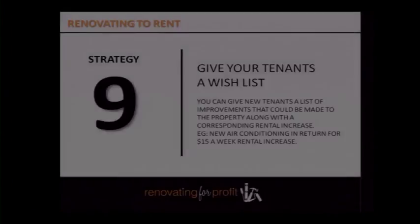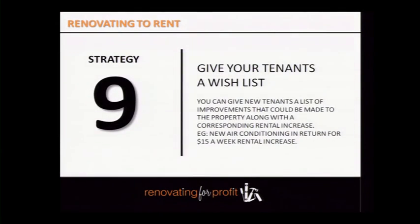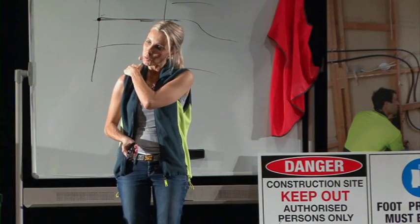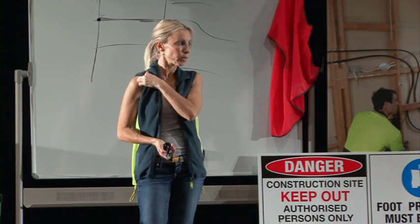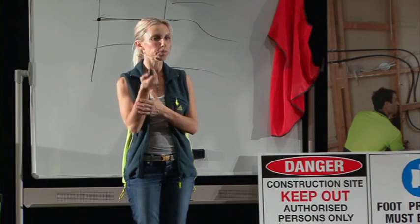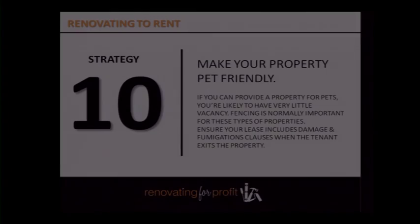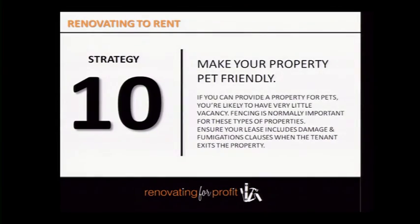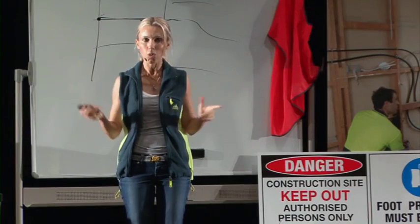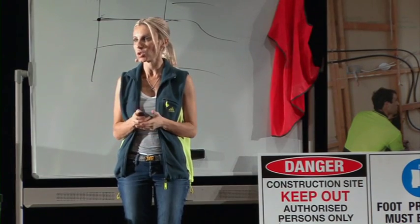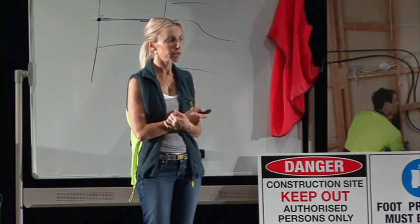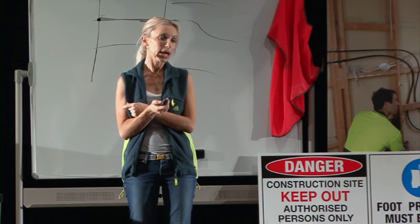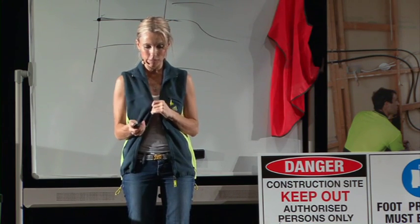Give tenants a wish list. If there are items you couldn't install during the renovation, offer them as optional upgrades for a small weekly increase — for example, 'I'll install split-system air conditioning if you pay an extra $20 a week' or 'ceiling fans in all bedrooms for an extra $10 a week.' Tenants think you're being proactive, but they're actually paying for it. Also consider making your property pet-friendly — factor that into your renovation planning if you're doing a buy-renovate-and-hold strategy.